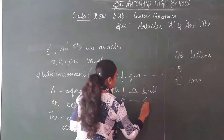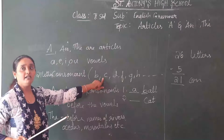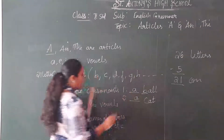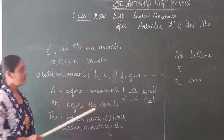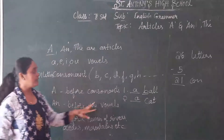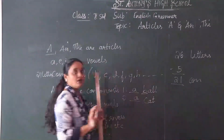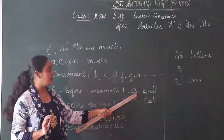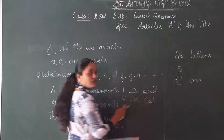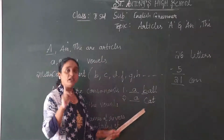Second one — C-A-T, cat. C is also a consonant. So what you have to write? A cat. It will always be singular — singular means one. So if you write balls, it will not use A. A is always used before a singular word. Ball means one single ball. Cat means one single cat.